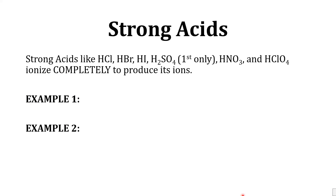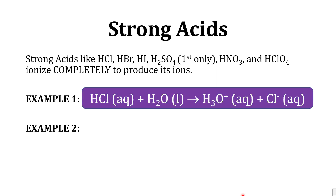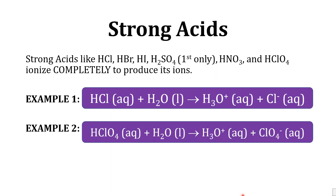Strong acids like HCl, HBr, HI, H2SO4, HNO3, and HClO4 ionize completely to produce their ions. Example one is when aqueous HCl or hydrochloric acid in liquid water ionizes to form aqueous solutions of hydronium and chloride ions. Example two is when aqueous HClO4 or perchloric acid, when ionized in liquid water, forms aqueous solutions of hydronium and perchlorate ions.